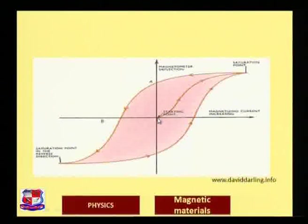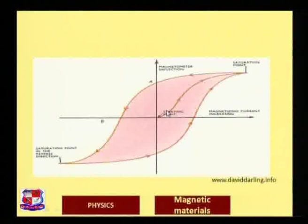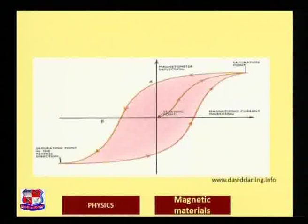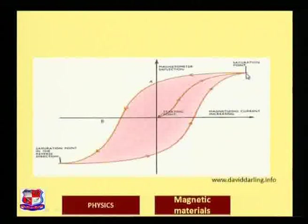The origin of the BH curve starts at point O. On one axis we have the magnetic field intensity. With the increase of external magnetic field — produced practically using magnetic coils — the curve increases up to a certain saturation point, and with further increase in magnetic current it becomes constant.